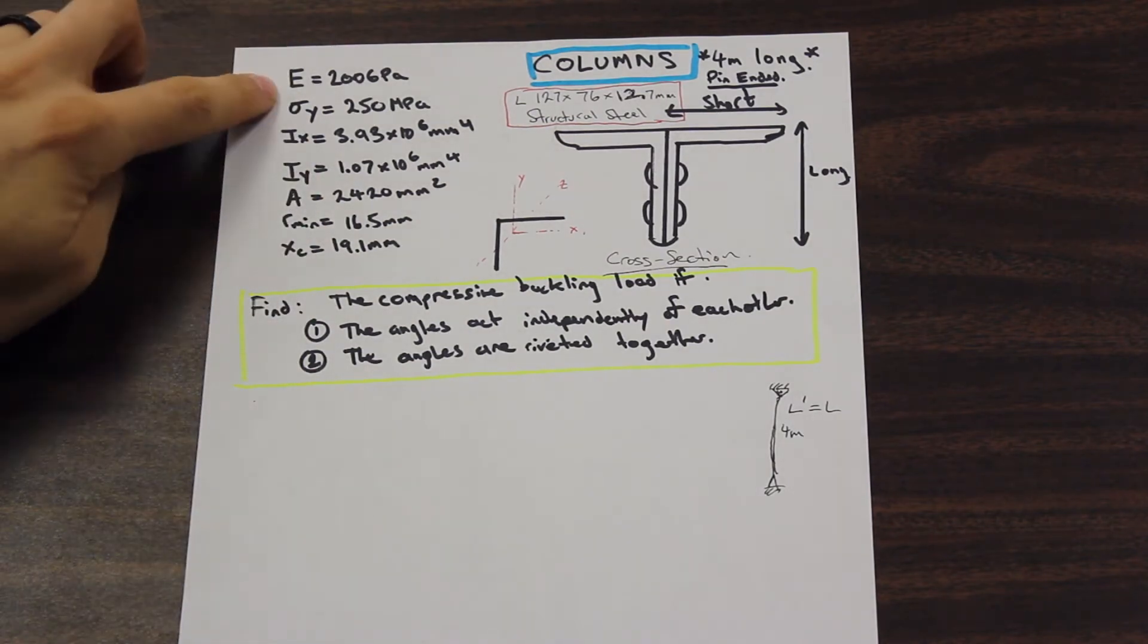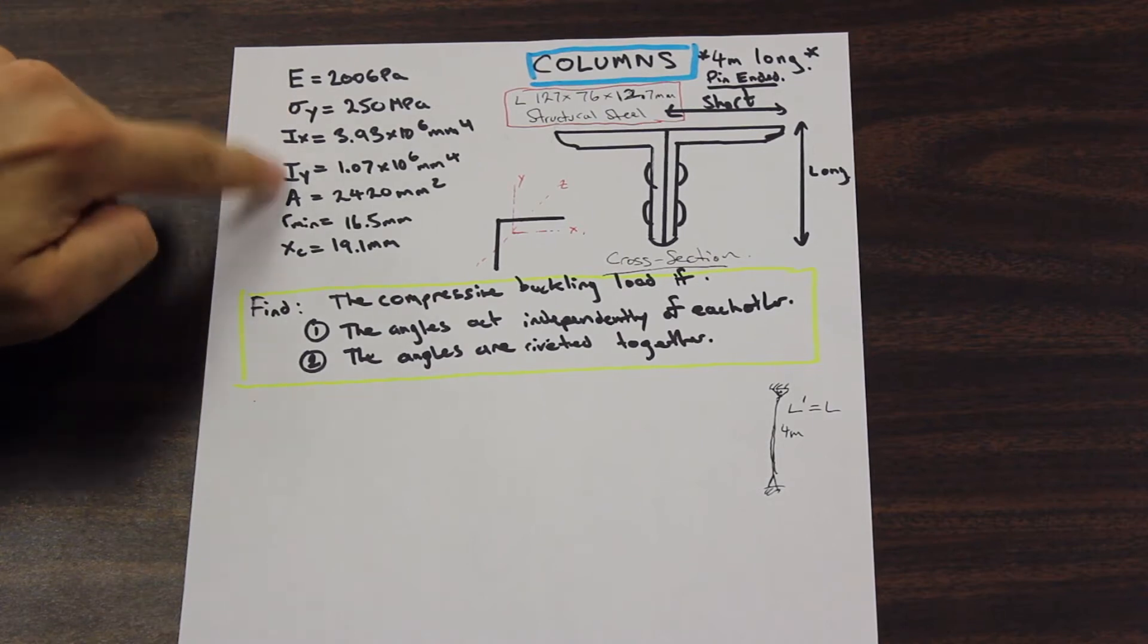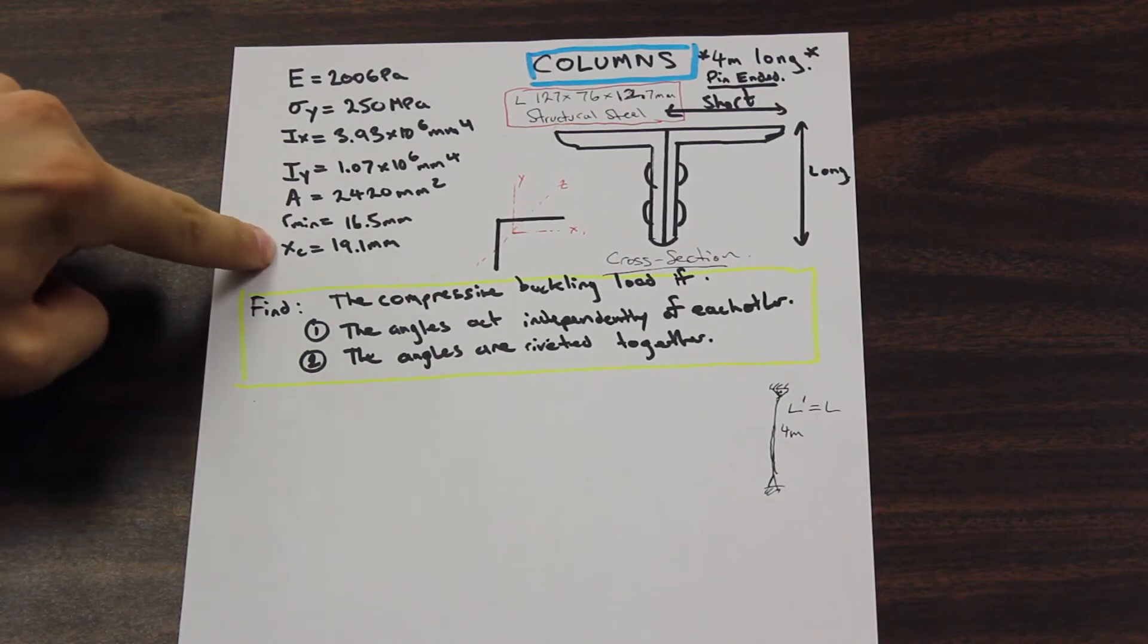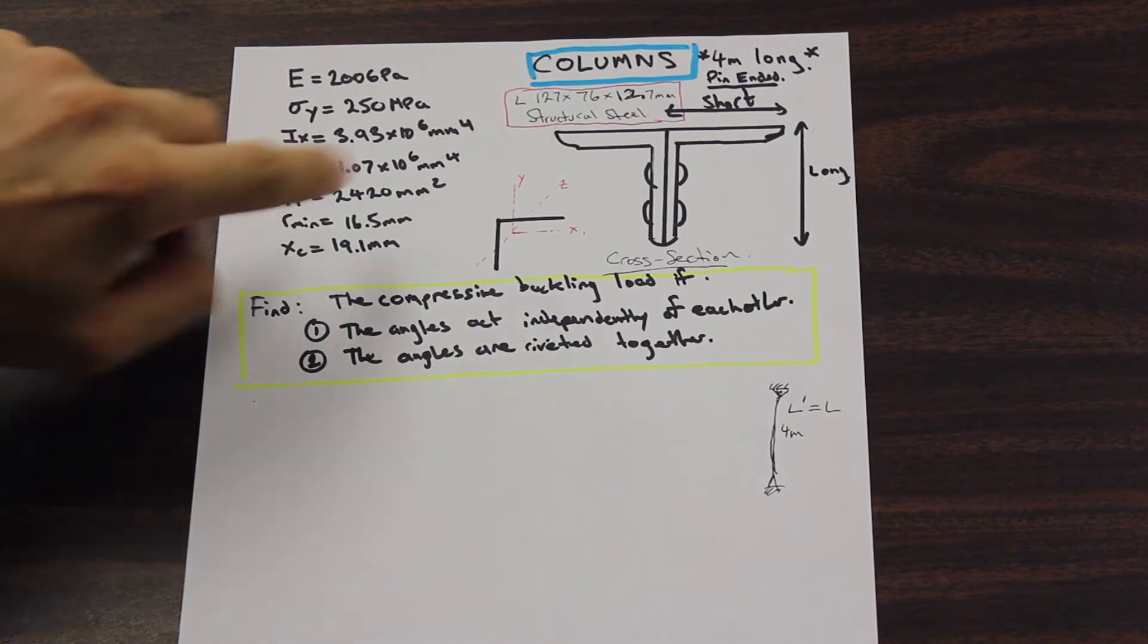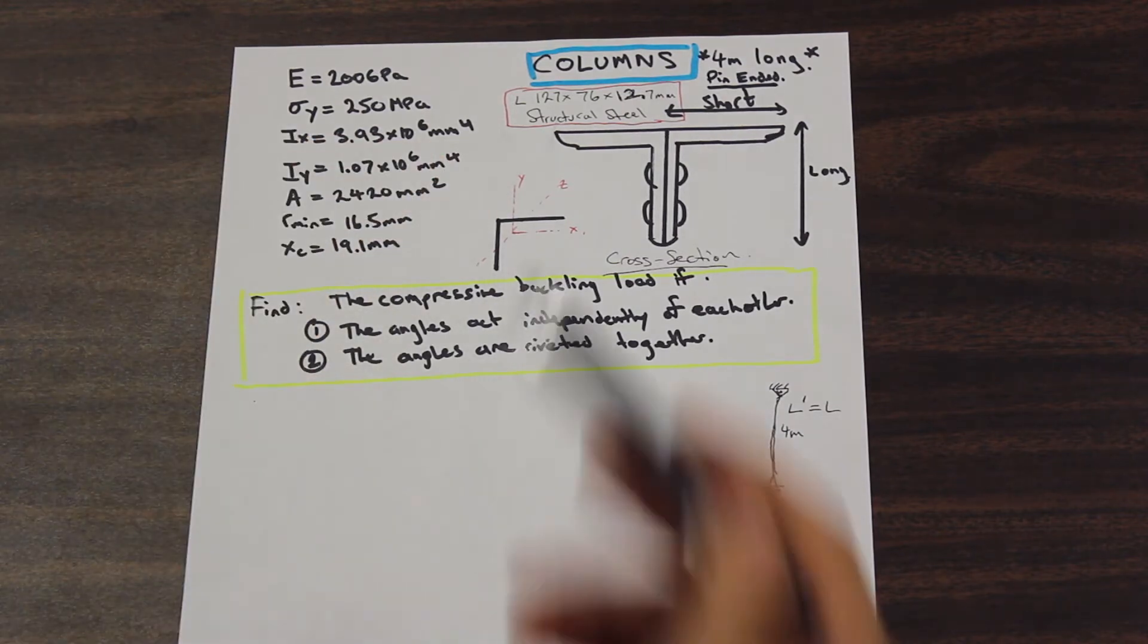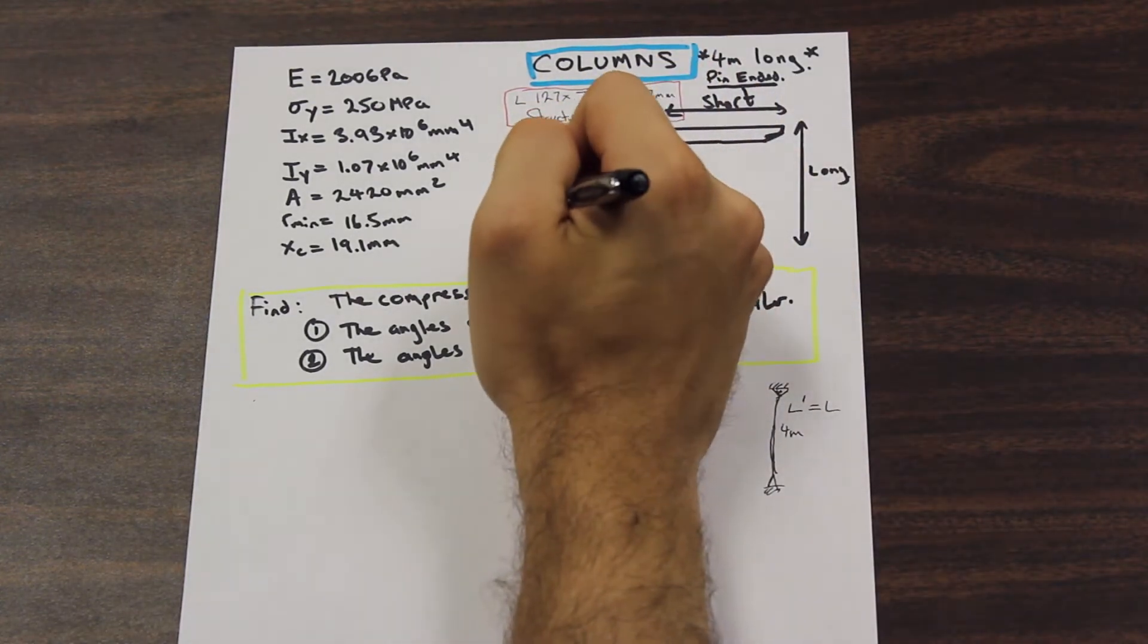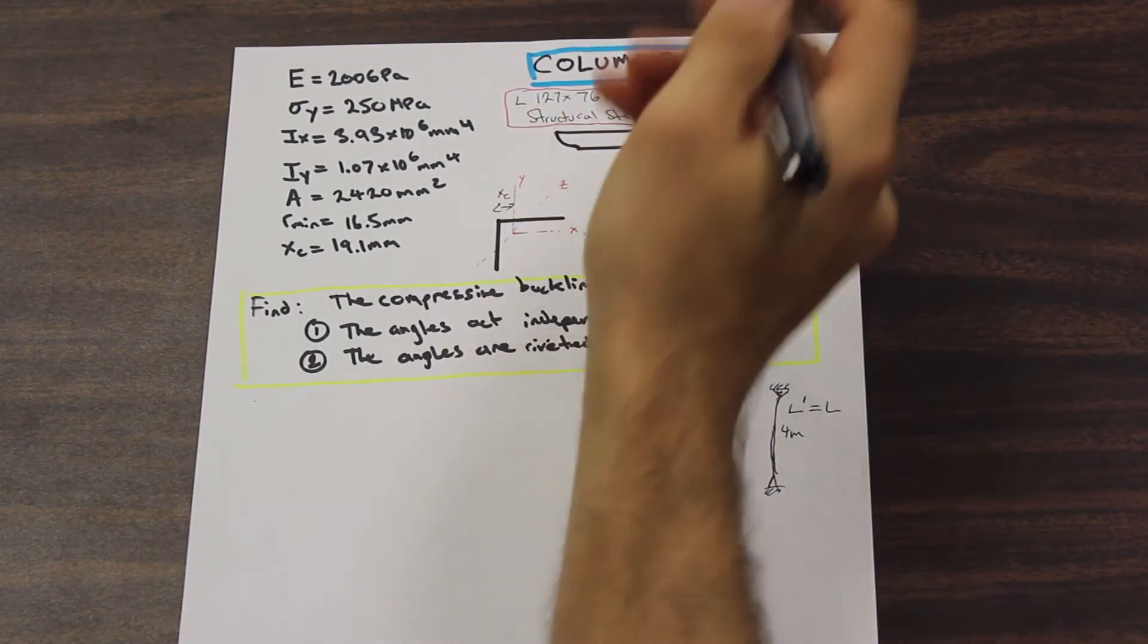So that's what I've done here. So we're given our E, our yield stress, both of our moment of inertia in the x and the y axis, the area, the radius, the minimum radius of gyration. We'll go over that in a sec, and the xc value, which is essentially our x bar, or our distance from here to the y neutral axis. So that's going to be our xc.